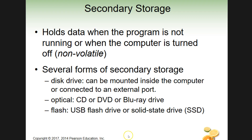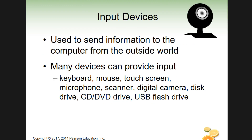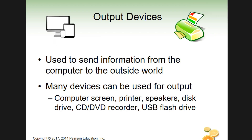Secondary storage devices are non-volatile, meaning the data stays when you shut the computer off. When you save a file to a hard drive and turn the computer back on, it's still there. Examples include hard drives, USB flash drives, solid state drives, and optical discs. You load files from secondary storage into RAM to work with them.